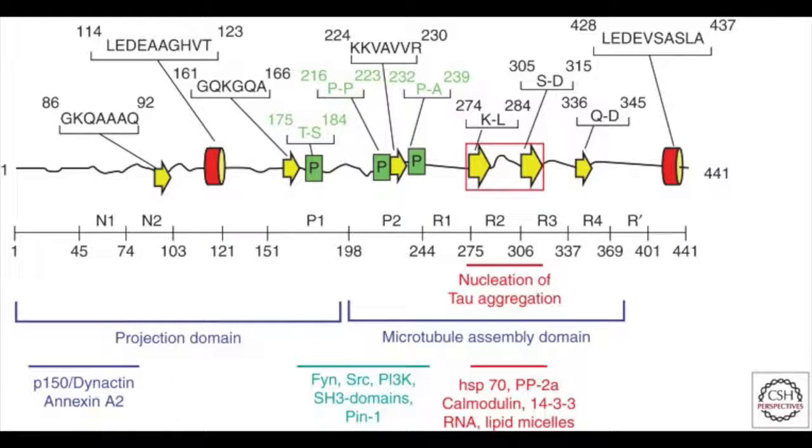Here is a tau protein unwound. The red boxes indicate where aggregation occurs, otherwise known as tangles. These tangles are what causes Alzheimer's patients to lose their memories.